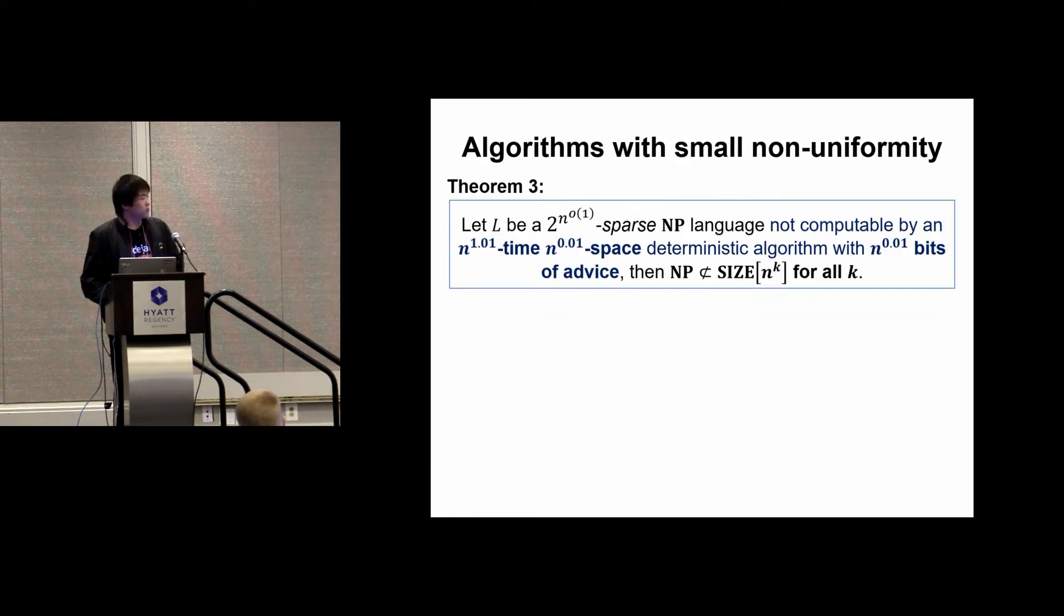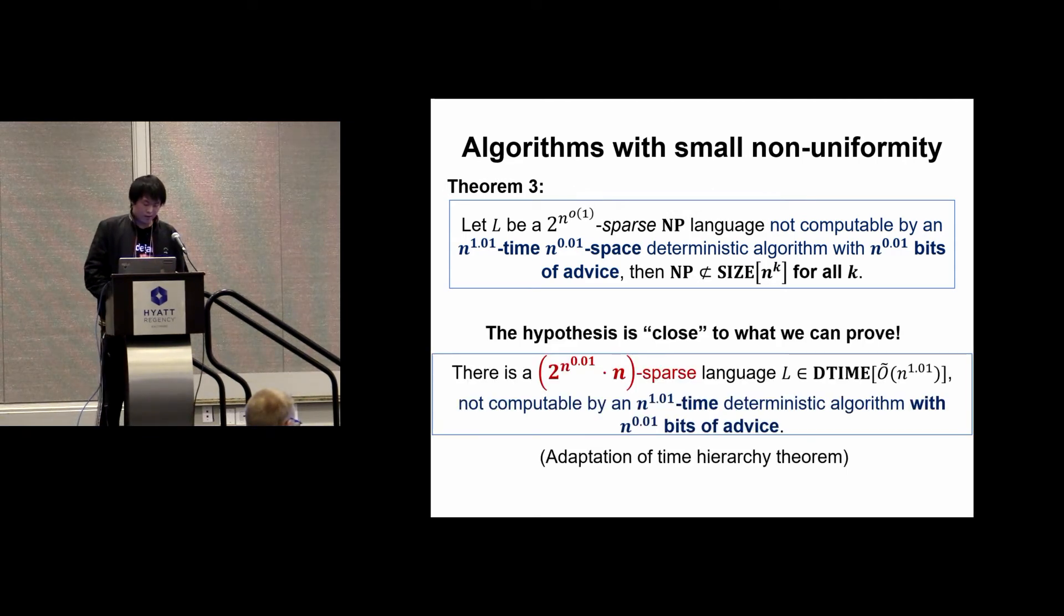Our results also apply to much more restricted computational models, which would make proving lower bounds easier. If L is a sub-exponentially sparse NP language that is not computable by an n^1.01 time, n^0.01 space deterministic algorithm with only n^0.01 bits of advice, then NP is not in size n^k for all k. Note that this model is actually much weaker than circuits of size n^1.01 because of the small space constraint and limited non-uniformity.